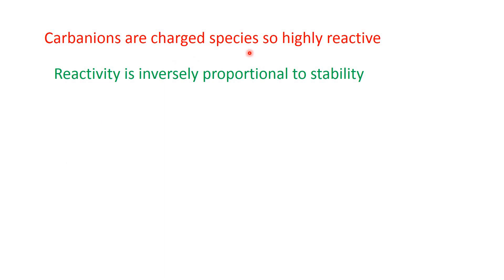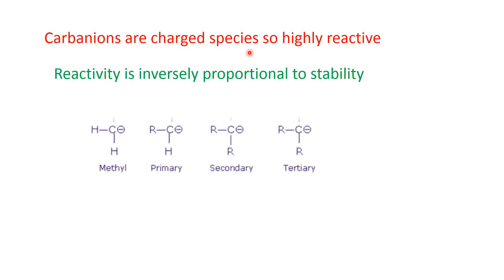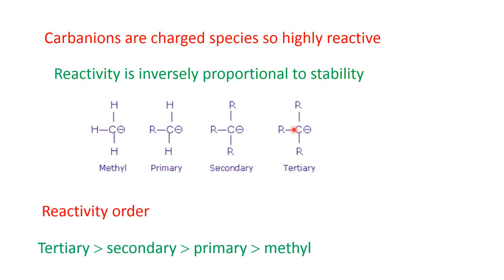Carbon ions are charged species, so highly reactive. Reactivity is inversely proportional to stability. This is methyl carbon ion, which is most stable, so it will be least reactive. This is primary carbon ion — its stability is less than methyl carbon ion, so it is more reactive than methyl carbon ion. This is secondary carbon ion, whose stability is still less than primary, so it will be more reactive than primary carbon ion. And this is tertiary carbon ion, which is least stable, so it will be most reactive. So reactivity order will be: tertiary > secondary > primary > methyl.